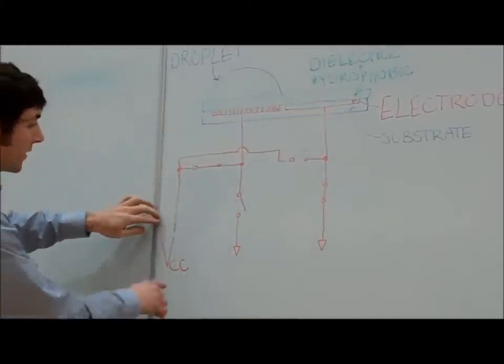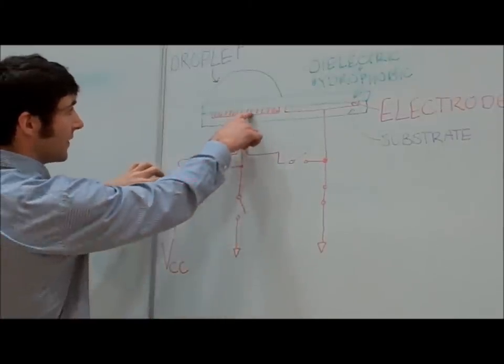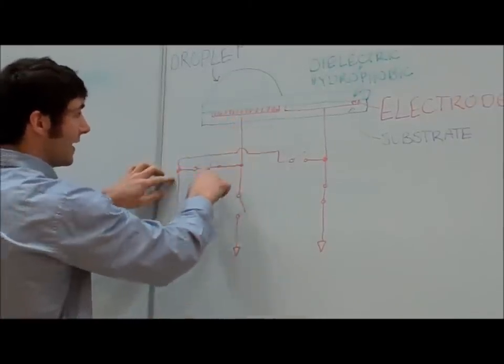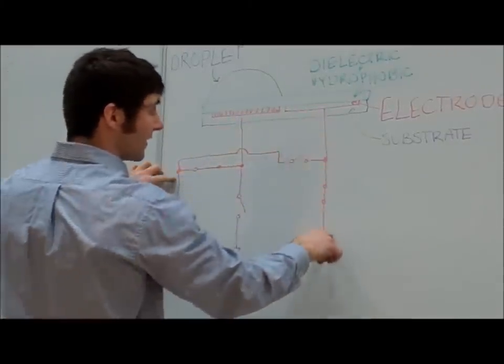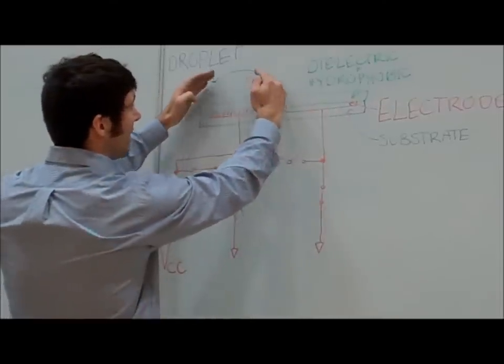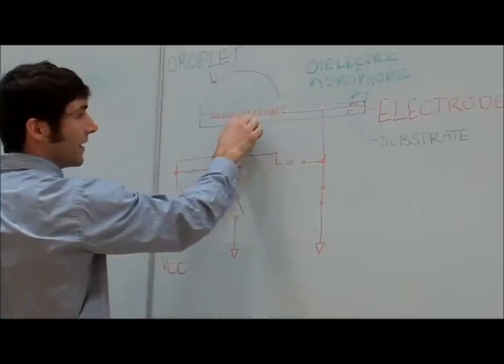So at the moment here, you can see our VCC is connected by a switch to this electrode. This one is high, and it's not connected here, and this one is connected to ground. So we have one high and one low, and this droplet is going to be formed over this electrode here.